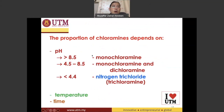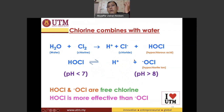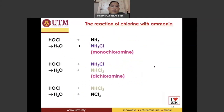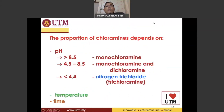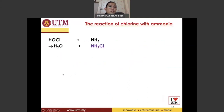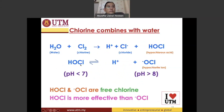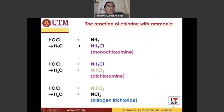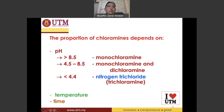If the pH is high, you are producing more hypochlorite ion, so it is natural to obtain more chloramine — monochloramine — compared to dichloramine or even nitrogen trichloride. If pH is between 4.5 to 8.5, you will see mostly monochloramine and dichloramine in your water. But if it's too acidic, you are producing a large amount of hypochlorous acid, so its reaction with ammonia will eventually produce more nitrogen trichloride.